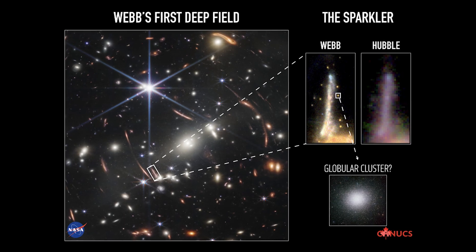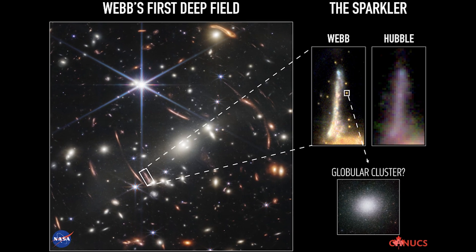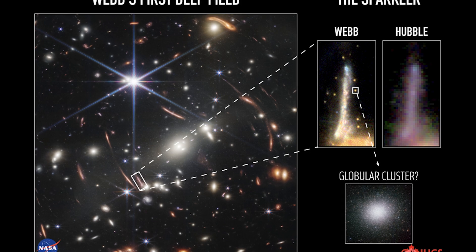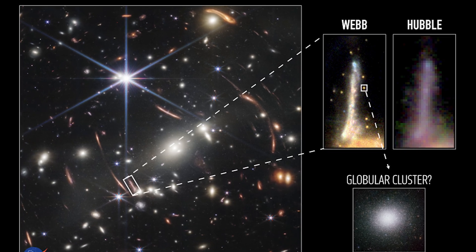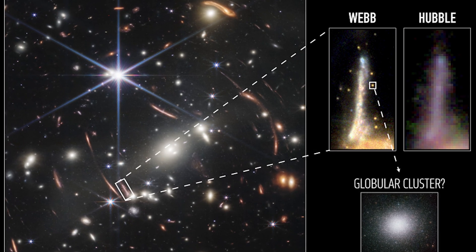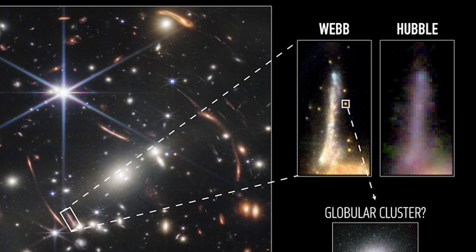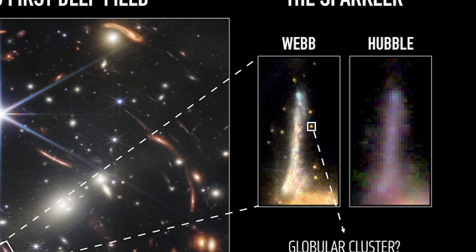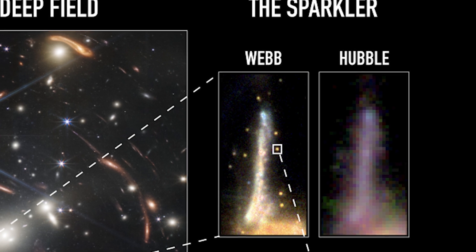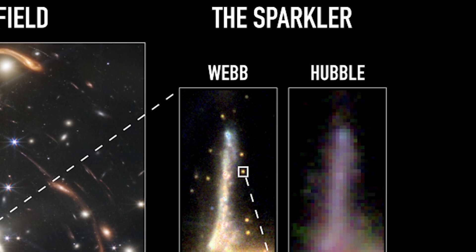Younger clusters of actively forming stars, born during the peak of star formation in the universe about 3 billion years after the Big Bang, or much older globular clusters, ancient collections of stars from a galaxy's infancy containing clues about its formation and growth, had been argued to be responsible for these sparkles.